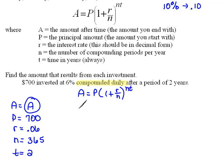All right, so let's go ahead and put in what we have. We have A = 700(1 + 0.06/365)^(nt). So that would be 365 times 2.